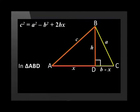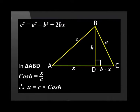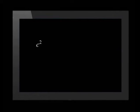From triangle ABD, cos A is equal to X over C. Therefore, X is equal to C times cos A. The equation would be C squared is equal to A squared minus B squared plus 2BC times cos A.